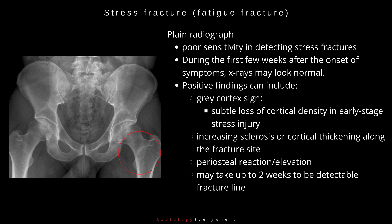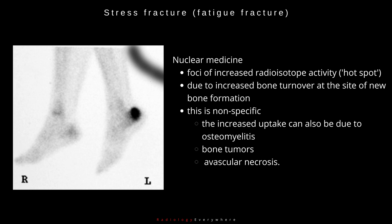Positive findings of a stress fracture on X-ray include the gray cortex sign — a subtle loss of cortical density in early stage stress injury — increased sclerosis or cortical thickening along the fracture site, and periosteal reaction or elevation.